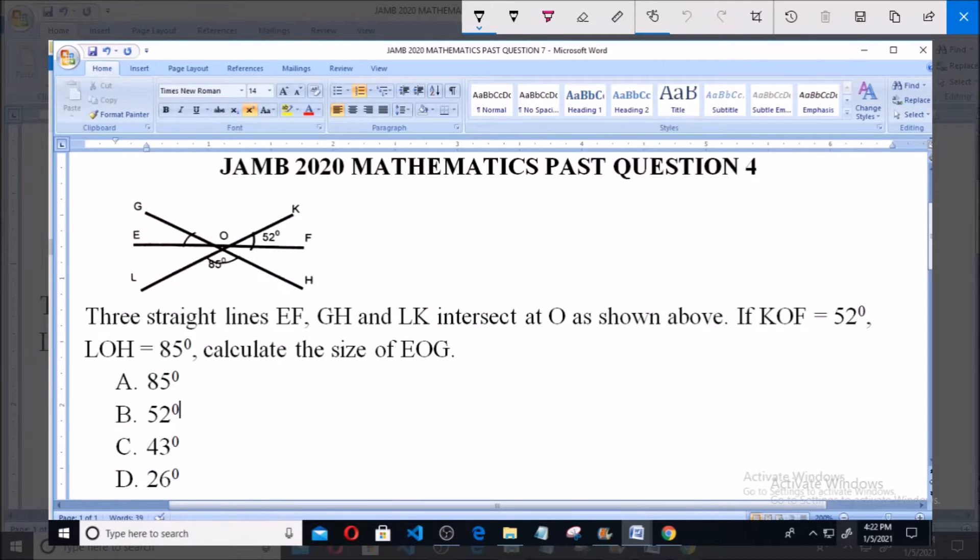Good day and welcome. I'll be answering JAMB 2020 mathematics past question four. Three straight lines EF, GH, and LK intersect at point O as you can see as shown above. If angle...